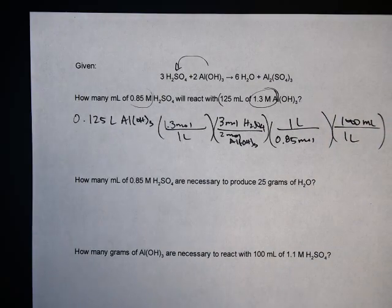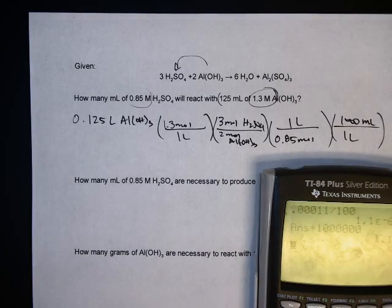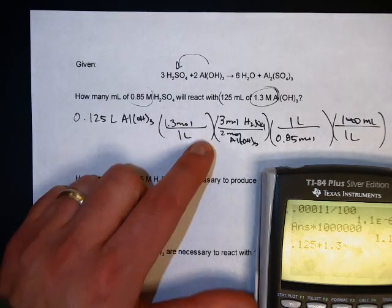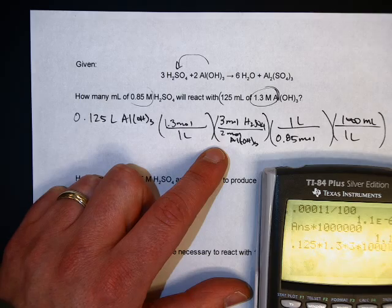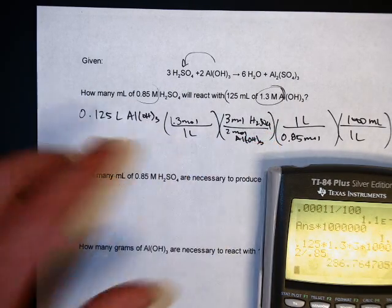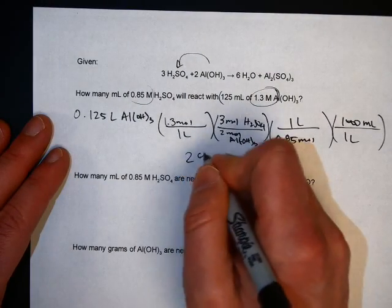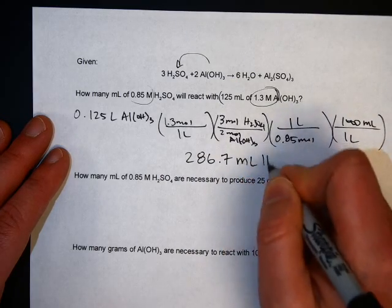And then when you plug it in to solve you get 0.125 times 1.3 times 3 times 1,000 divided by 2 divided by 0.85. I got 286.7 milliliters of H2SO4.